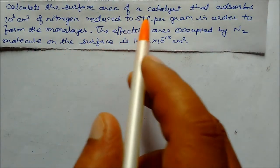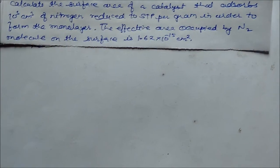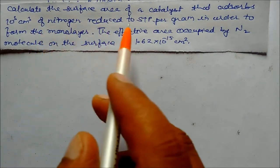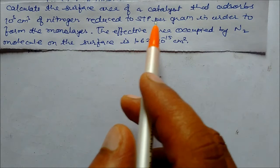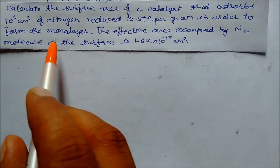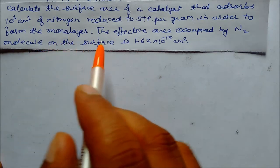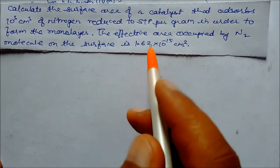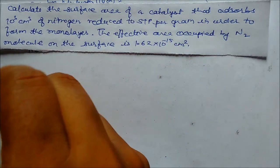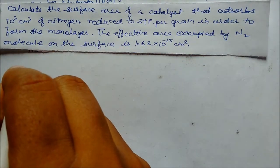Calculate the surface area of a catalyst that adsorbs 10³ cm³ of nitrogen at STP per gram in order to form a monolayer. The effective surface area per nitrogen molecule on the surface is 1.62 into 10 to the power minus 15 cm squared. So first we have to find the number of nitrogen molecules.